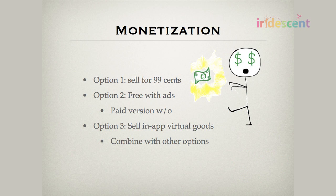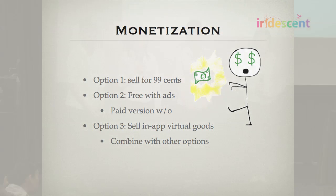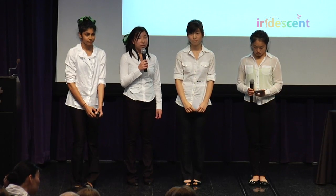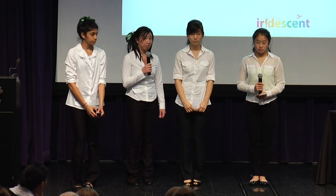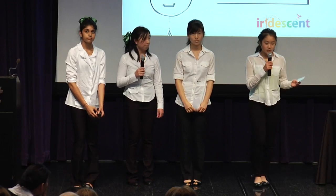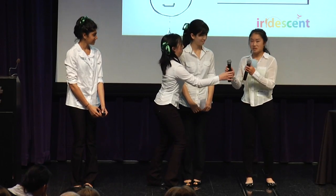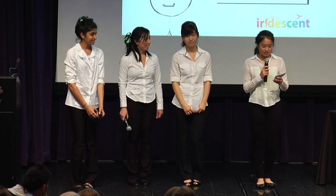As you can see, we have three options for monetization, but we've decided that the best choice is to have a free version with ads and a paid version without ads for 99 cents. If we reach our goal of 1%, we calculated that total profits will be about $848,000.